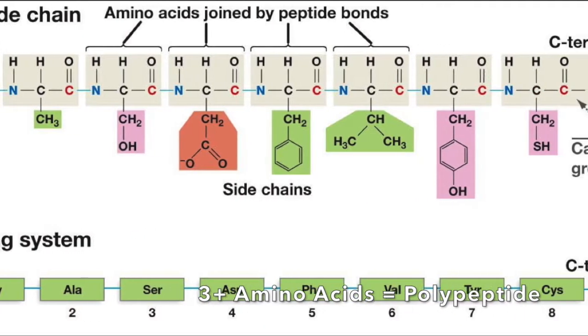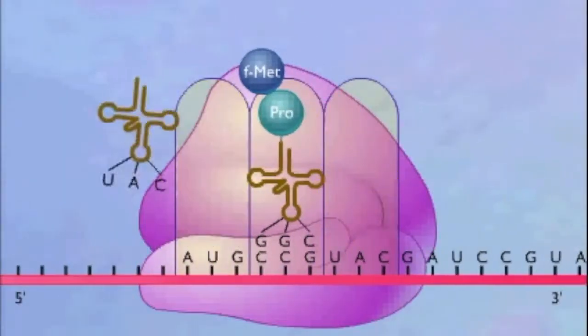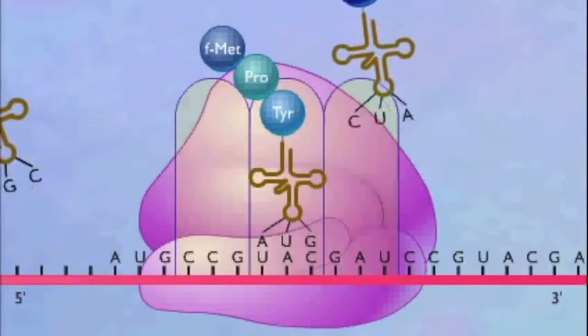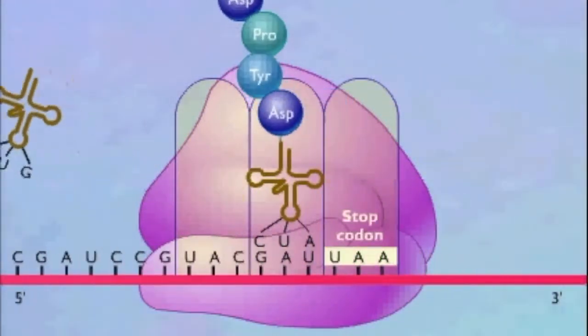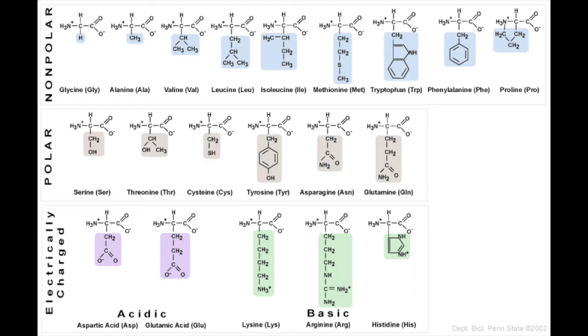Three or more amino acids form polypeptides. The amino acid sequence of a polypeptide is also known as its primary structure. The only part of amino acids that is variable is the R group. The R group gives each amino acid its unique chemical properties, whether they are nonpolar, polar, or polar ionic.